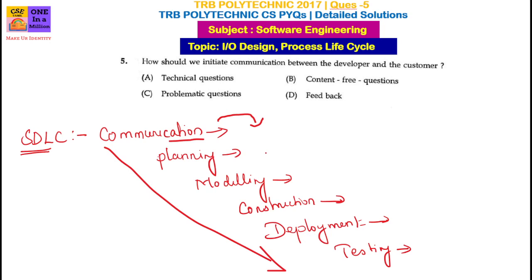That is why you plan on the developer team — we are planning on the project, executing on the project, designing, coding, and the construction process. We are also doing integration testing and validation testing. So, in the SDLC process: communication, planning, modeling, construction, deployment, and testing.